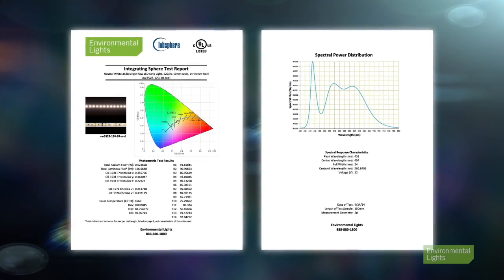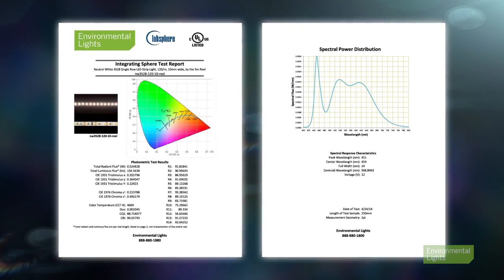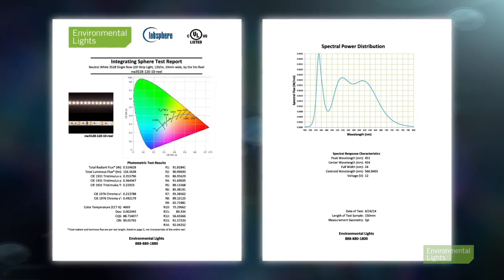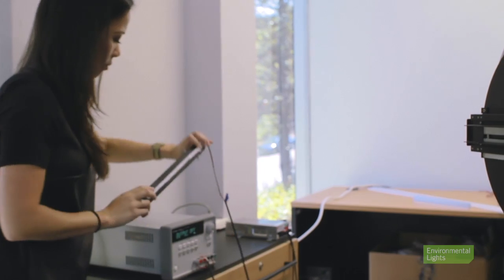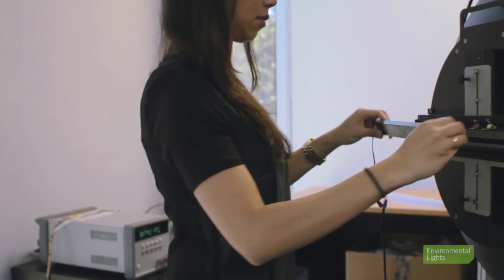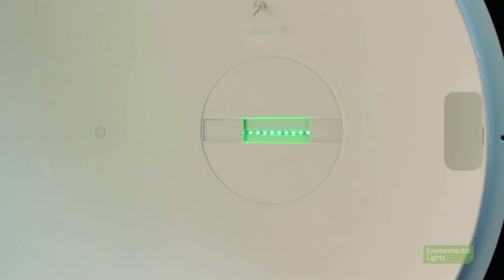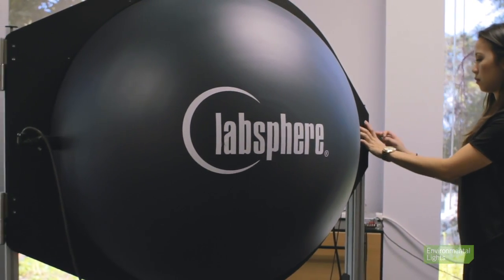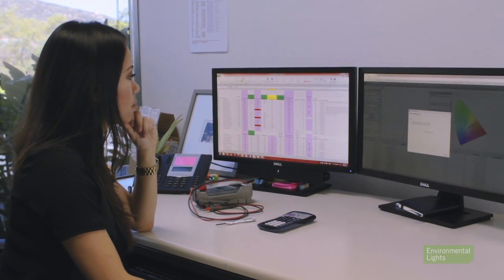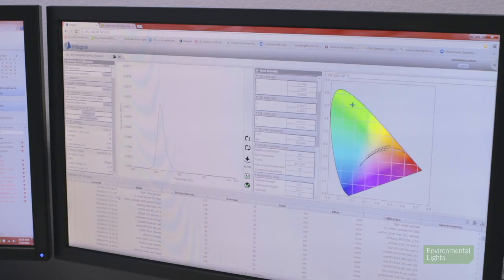Here at Environmental Lights, we provide integrating sphere test reports for all our LED strip light products. These reports include photometry data generated from scanning the product in our LabSphere Illumia Plus light measurement system. This system includes a one meter sphere with integrated high-end spectrometers, auxiliary lamps, and other sensors for the correction of light absorption to ensure accurate test results.